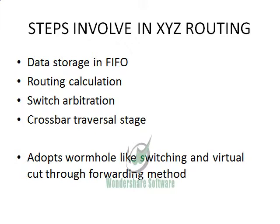The steps involved in this routing algorithm are: first, data will be stored in the FIFO, which is termed as buffer writing. Secondly, the routing calculation will be done, followed by switch arbitration and the crossbar transfer stage. It pre-computes the next port direction of the downstream router. It also adopts wormhole-like switching and virtual cut-through forwarding methods. When the buffer size is equal to or greater than the number of flits, the virtual cut-through forwarding method is applied, and when the buffer size is less than the number of flits, it adopts the wormhole-like switching method.